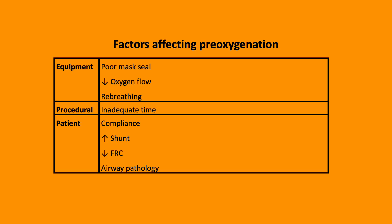Multiple factors can affect the efficiency of pre-oxygenation. Examples include equipment, procedural, and patient factors. Equipment factors include mask seal, which could be due to facial pathology or an inadequately sized mask, low flow oxygen rates, and re-breathing within the circuit. Procedural factors include inadequate time for pre-oxygenation, and patient factors relate to compliance.